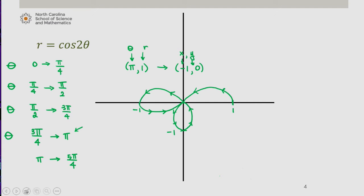I'm going to change colors here just to give you a little bit of a clearer picture here. Now let's take a look when theta is between 5 pi over 4 and 3 pi over 2.